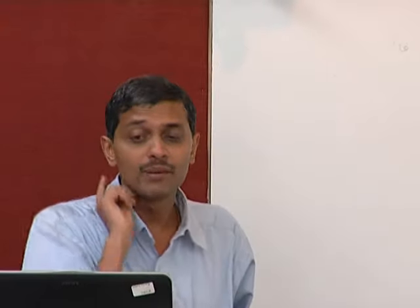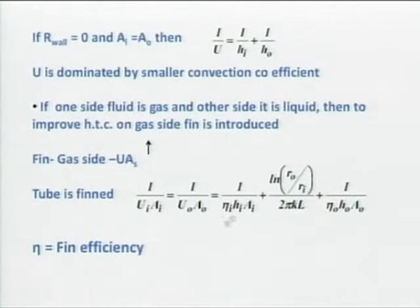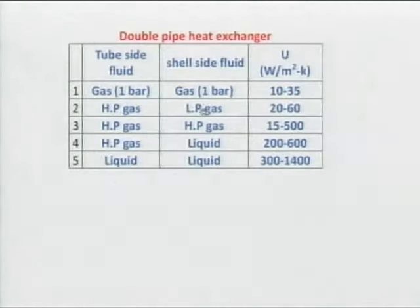We need to qualify whether the overall heat transfer coefficient is based on inner area or outer area. If I have fins, I will put the fin efficiency on both the inner side and outer side. These are the typical heat transfer coefficient values. For two-phase flow heat exchangers, you will have higher heat transfer coefficients. We need to spend time on fouling because students cannot easily realize its importance.